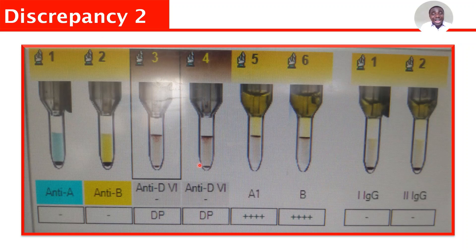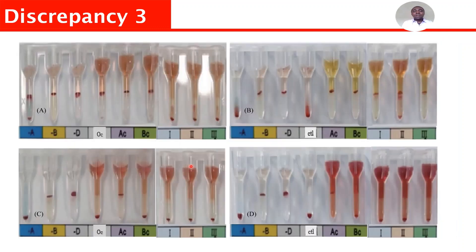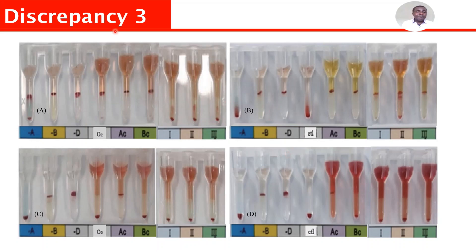The key word here is discrepancy. These are factors that can lead to discrepancy in blood group and antibody screening. Here is an example of how cold agglutinins can lead to discrepancy — you can see there is reaction everywhere. You cannot get a clean result until that cold antibody is removed. This is a typical example of cold agglutinins affecting blood group and antibody screening.